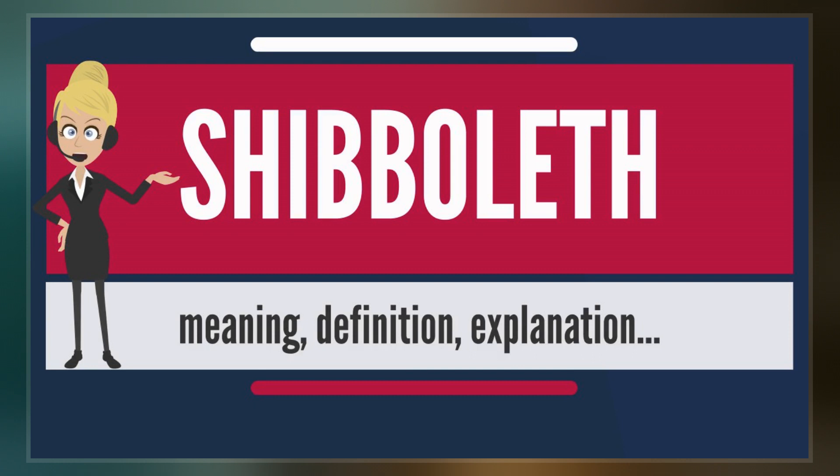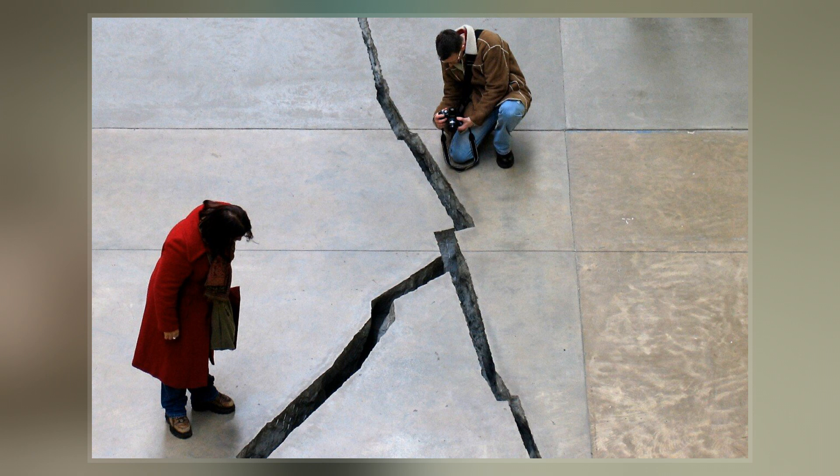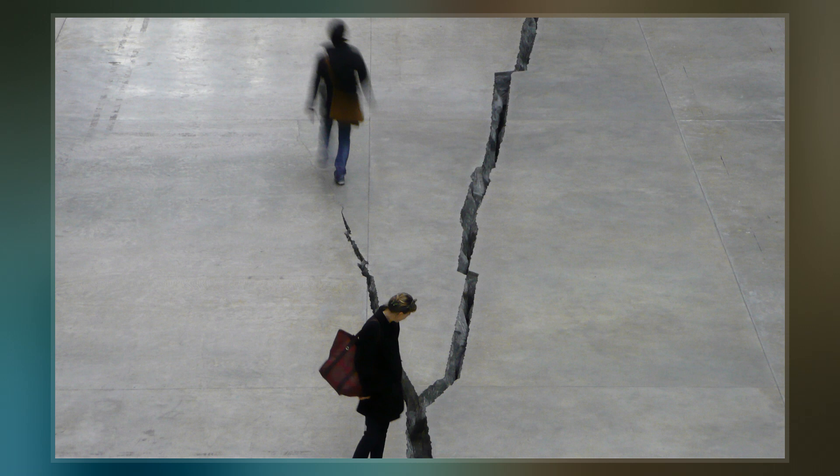The modern use derives from an account in the Hebrew Bible in which pronunciation of this word was used to distinguish Ephraimites, whose dialect used a differently sounding first consonant. The difference concerns the Hebrew letter shin, which is now pronounced as dot, in the Book of Judges, chapter 12.